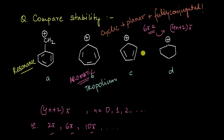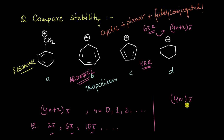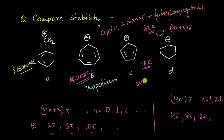So the tropolium cation is aromatic. Now if we look at this particular cation, even this is cyclic, planar and fully conjugated, and even this can have resonance. But if we count the total number of pi electrons here, it's going to be 2 plus 2 — so this only has 4 pi electrons getting delocalized. We know that if the total number of delocalized pi electrons equals 4n, where n is 1, 2, 3 and so on — so 4, 8, 12 and so on — then such cyclic, planar and fully conjugated systems are extra unstable: they are anti-aromatic. So this particular cation is anti-aromatic.